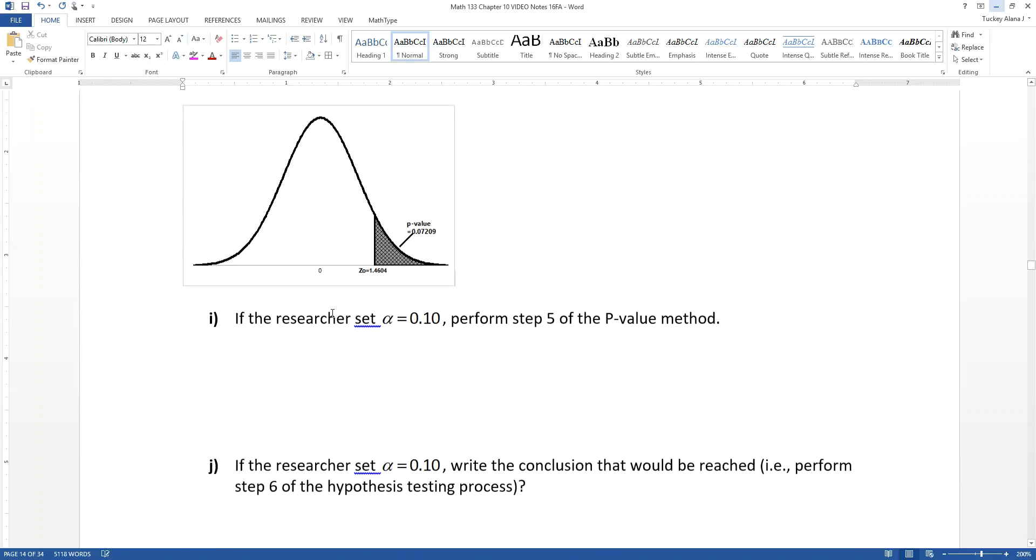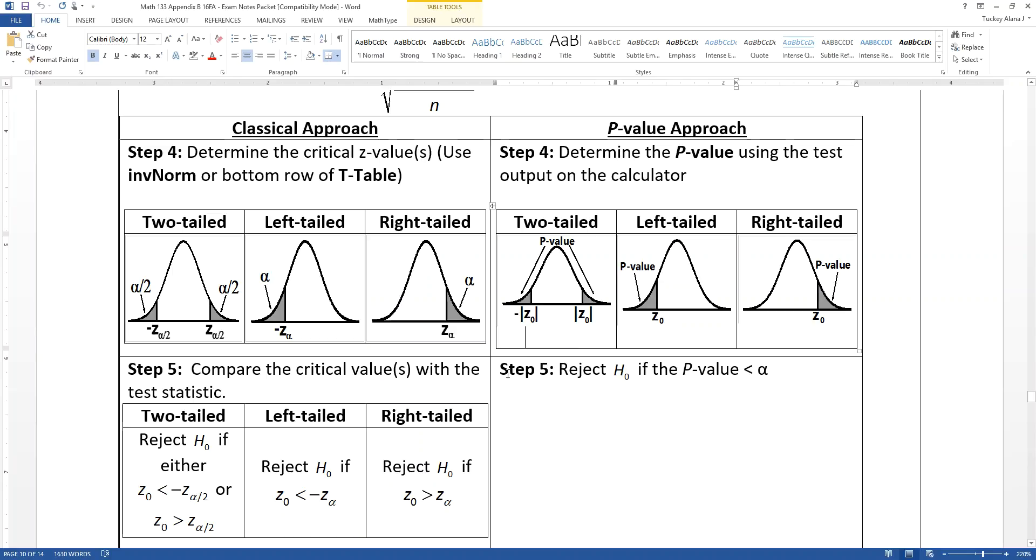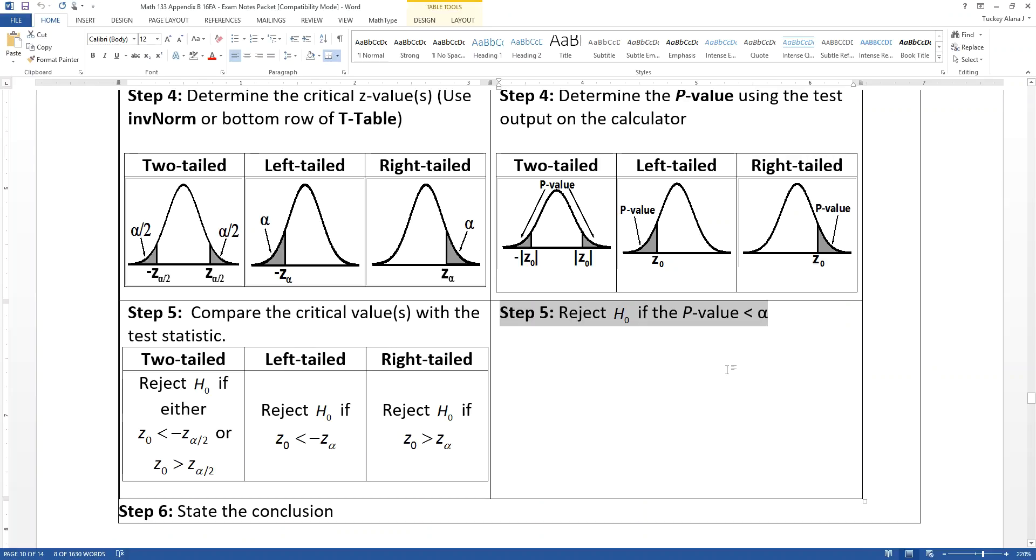So then what decision would we make? So if we go back to the steps, it says, and I love the P value method because it's very simple. You reject H naught if your P value is less than alpha. If what you found was rare, had a low chance of happening, you will reject the null hypothesis.